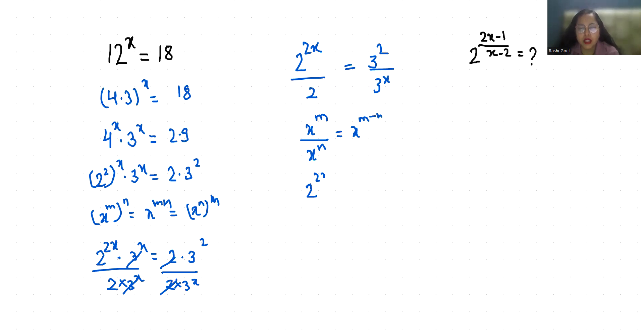So 2 power 2x minus 1 equals 3 power 2 minus x.